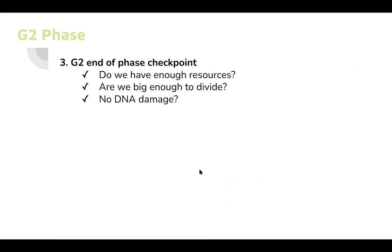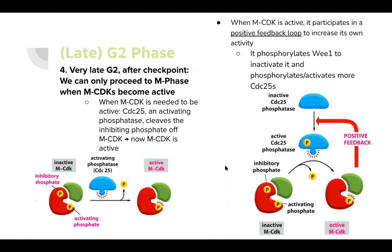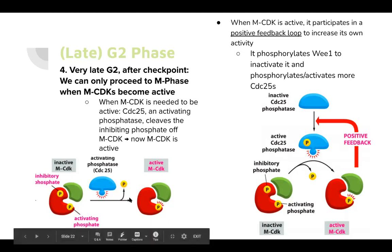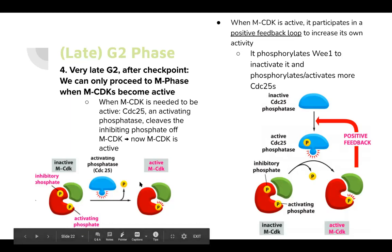At the G2 checkpoint the cell checks: does it have enough resources, is the cell big enough to divide, and is there no DNA damage? In late G2, the cell can only proceed to M phase when M-CDKs become completely active. CDC25 is an activating phosphatase that cleaves off the inhibiting phosphate from M-CDK, making it active. When M-CDK is active it participates in its own positive feedback loop: it phosphorylates WE1 to inactivate it, and phosphorylates more CDC25s. As more CDC25s are activated, they remove the inhibitory phosphate from additional M-CDK molecules, making them active.